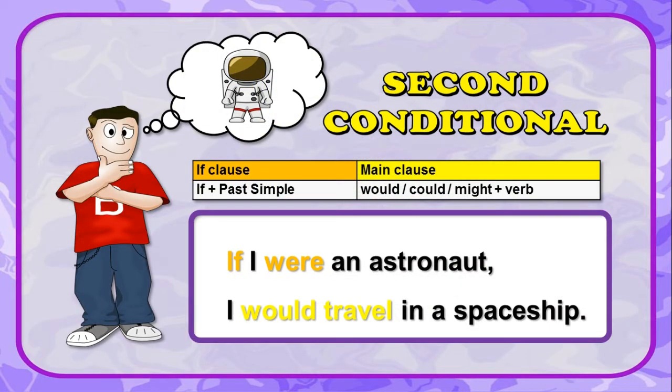Second conditional. The formula: if clause — if plus past tense — and the main clause uses would plus verb. For example: if I were an astronaut, I would travel in space.